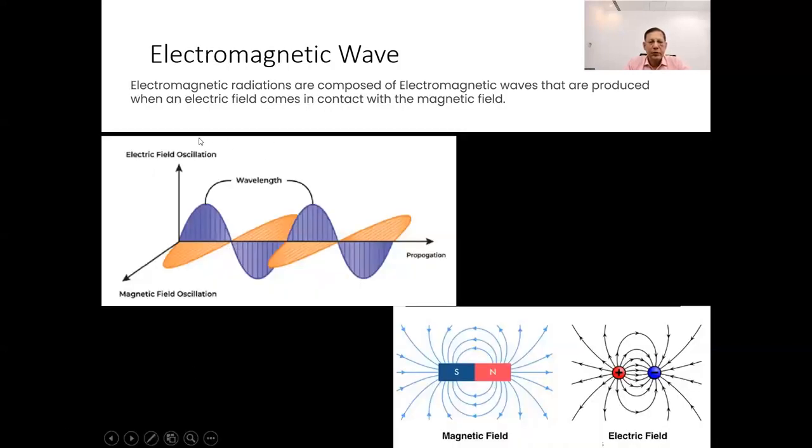Electromagnetic radiations consist of electromagnetic waves, which are generated when an electric field comes in contact with a magnetic field. This interaction causes a disturbance in the electric and magnetic fields, resulting in the propagation of electromagnetic waves through space. These waves carry energy in the form of oscillating electric and magnetic fields.